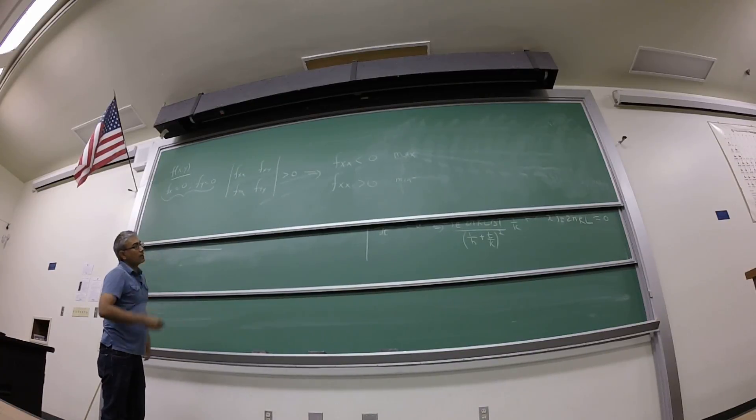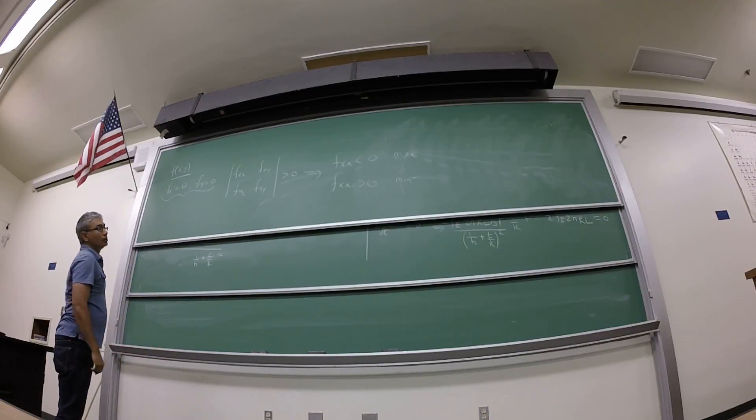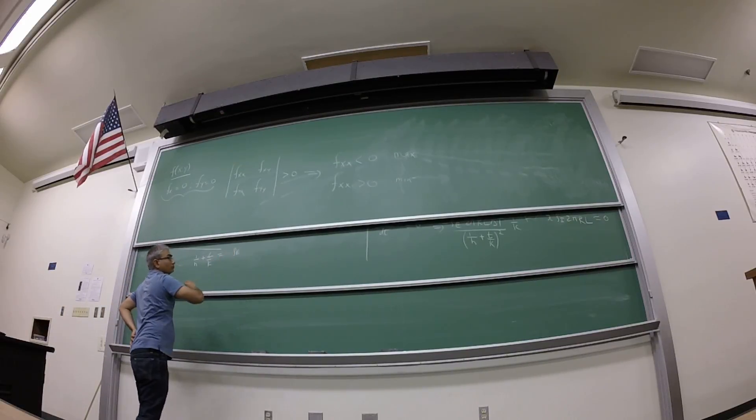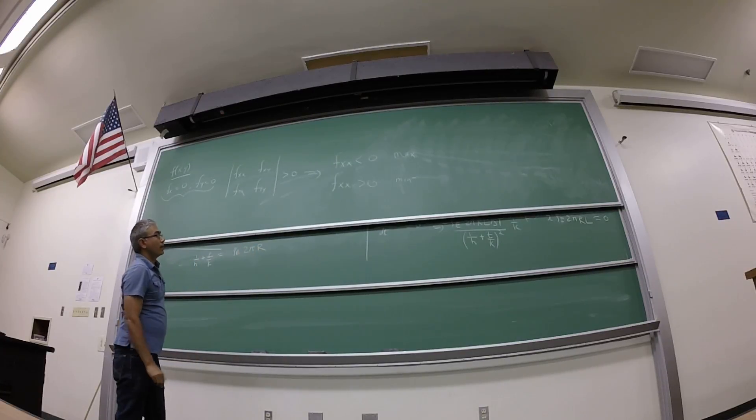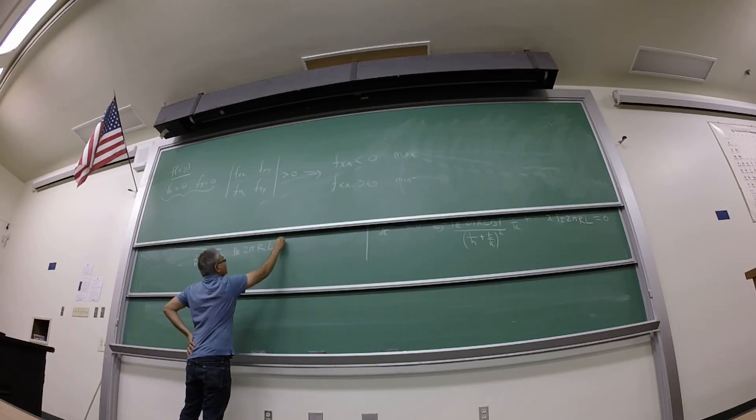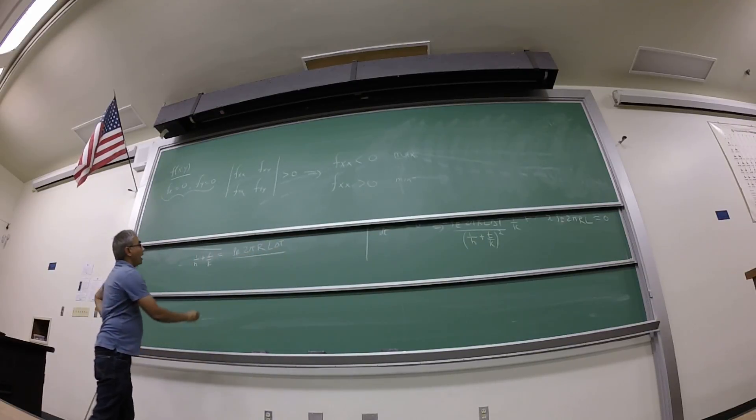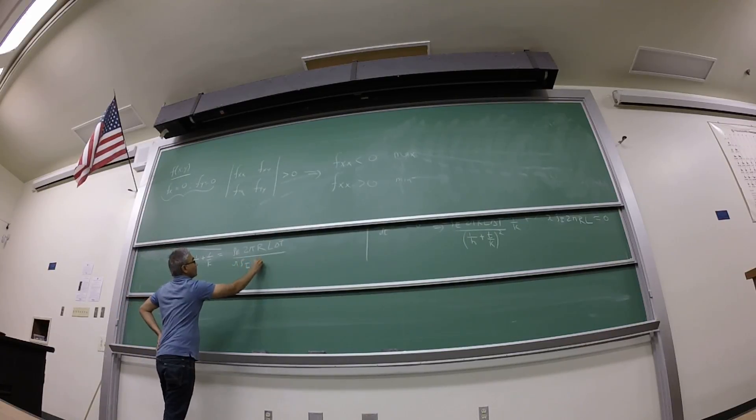I'm going to solve it here. So you can solve it by saying, therefore you get 1 over h plus t over k equals to rho e 2 pi r L delta t divided by r rho i divided by r.